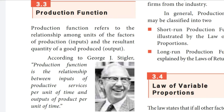Lastly, you are going to learn about production function. Production function refers to the relationship among units of the factors of production or inputs and the resultant quantity of a good produced or output. The functional relationship between inputs and output is known as production function. Inputs refer to the factor services used in production — that is, land, labor, capital and organization. Output refers to the volume of goods produced. According to George J. Stigler, production function is the relationship between inputs of productive services per unit of time and output of product per unit of time.